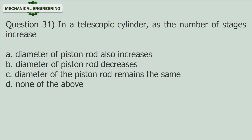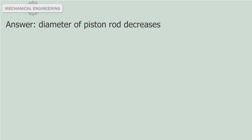Question 31: In a telescopic cylinder, as the number of stages increases: A. Diameter of piston rod also increases. B. Diameter of piston rod decreases. C. Diameter of the piston rod remains the same. D. None of the above. Answer: Diameter of piston rod decreases.